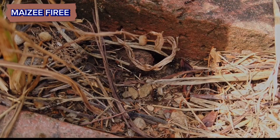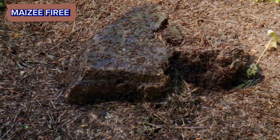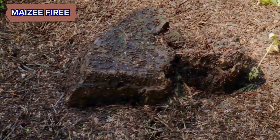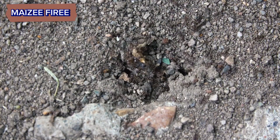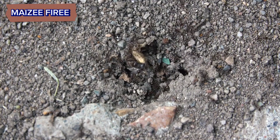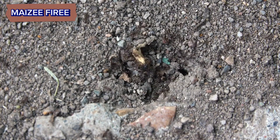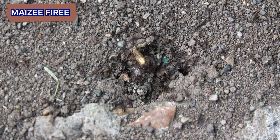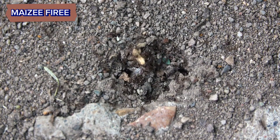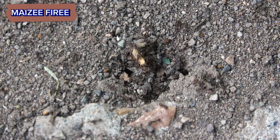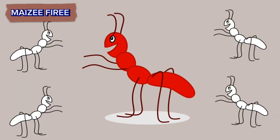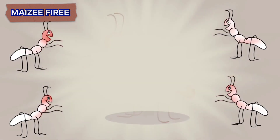Carpenter ants — appearance. Carpenter ants vary in size and color, but they are generally larger than many other ant species, with workers measuring 6 to 12 millimeters in length. They can be black, red, or a combination of both colors.